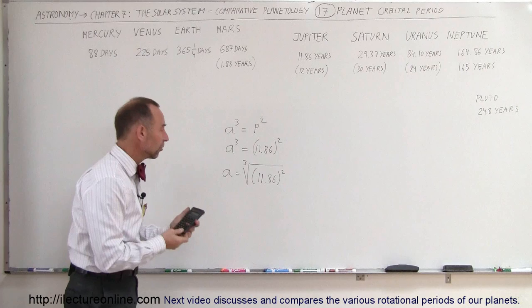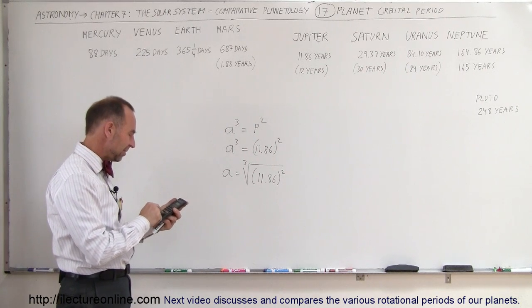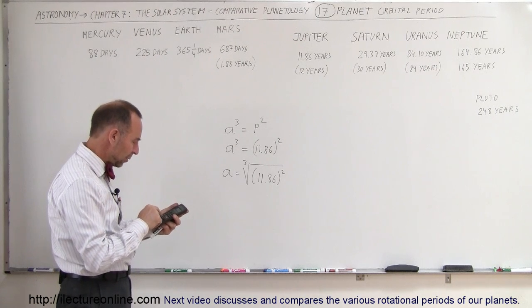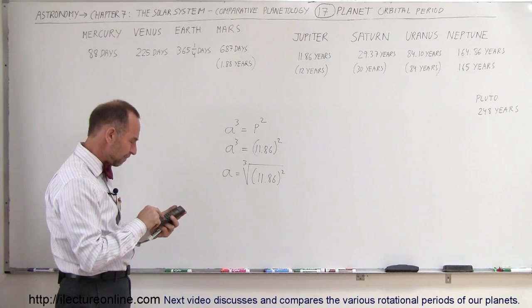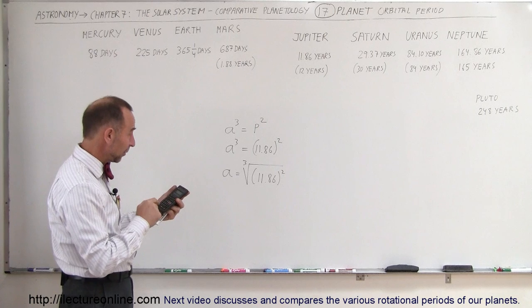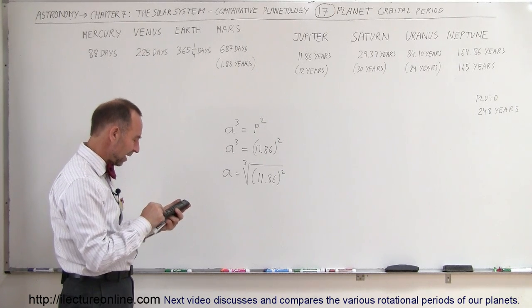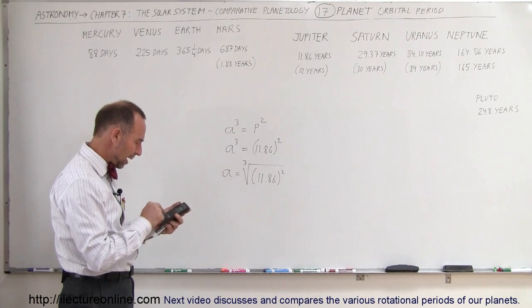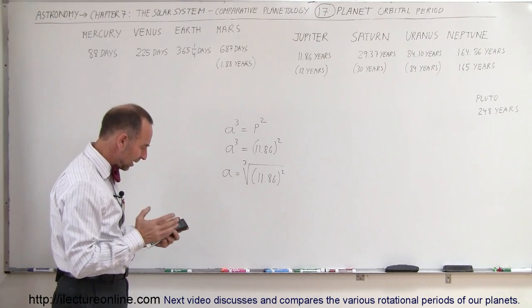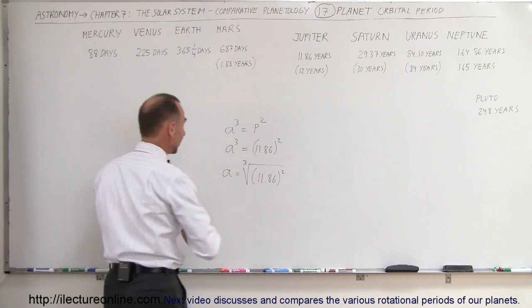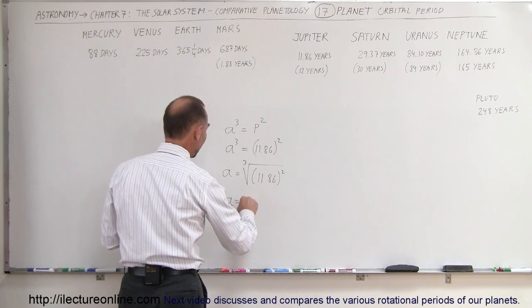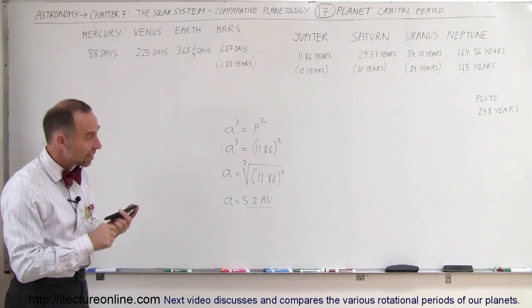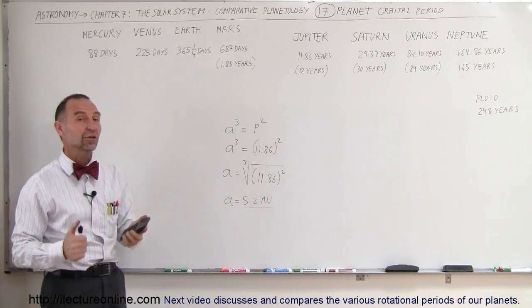So let's try that. That would be the answer in astronomical units. So we get 11.86, we square that number, and then we take the cube root of that number, so we raise that to the... oh, let me try it again. That was wrong. So 11.86, we square that, and now we take that and raise it to the one-third power, let's take the cube root, and that comes out to be 5.2. So we say that A is equal to 5.2, and of course, that would be in astronomical units, which is about the right answer for the average distance between the sun and Jupiter.